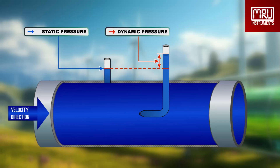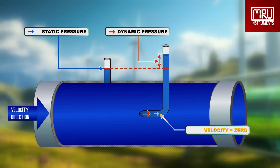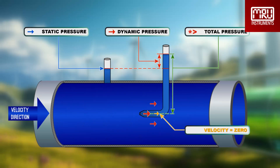When the fluid enters the pitot tube, the velocity of the fluid becomes zero and is converted into dynamic pressure. We therefore get stagnation pressure, also referred to as total pressure, which is the sum of static pressure and dynamic pressure.